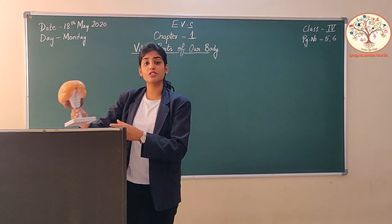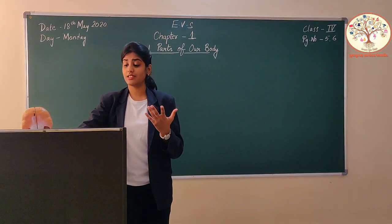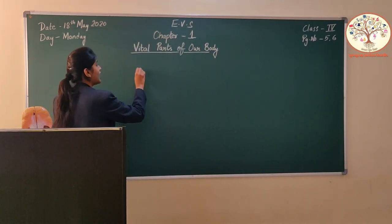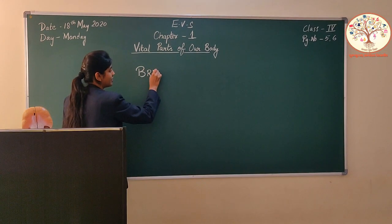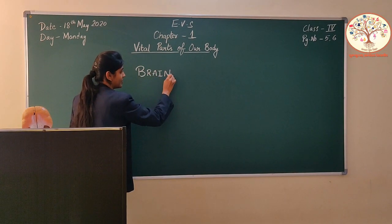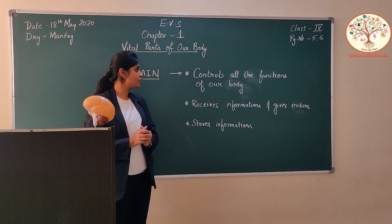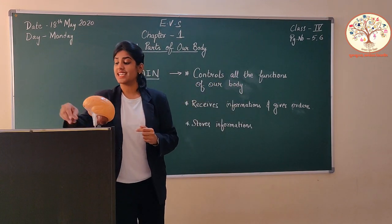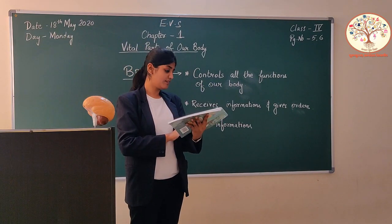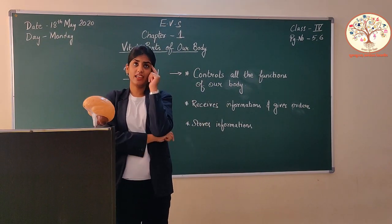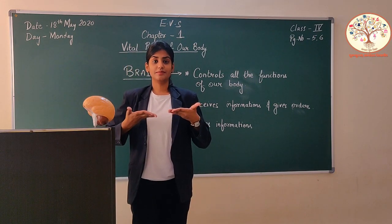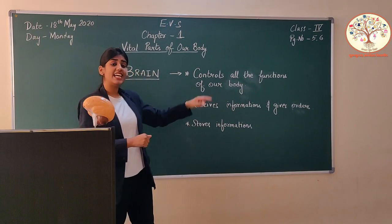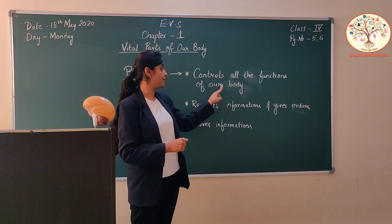Basically, brain is the boss of our body. Boss means something that controls everything. So today we are going to talk about the functions of brain. The first function is it controls all the functions of our body, such as learning, thinking, breathing, dancing, and so on.